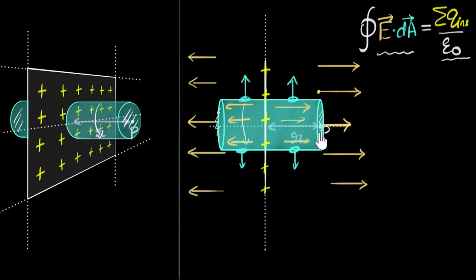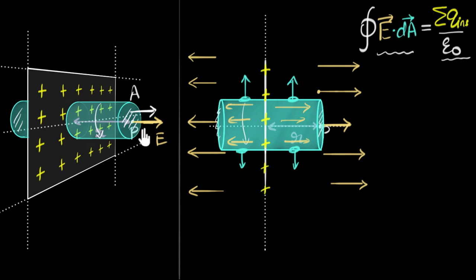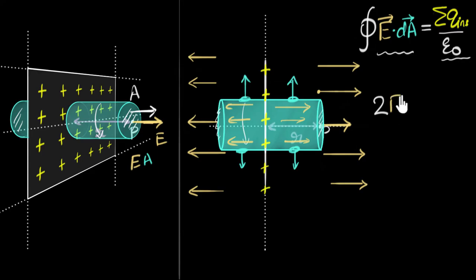The flux only gives a nonzero value on the front surface and the back surface. On the front surface, the electric field is some value E pointing to the right. Since the surface is flat, the area vector points outward — in the same direction as the electric field. The angle between the area vector and the electric field vector is zero, so cos zero equals one. The dot product is just E times dA, and integrating over the whole surface gives E times A. So the flux through the front surface is E times A.